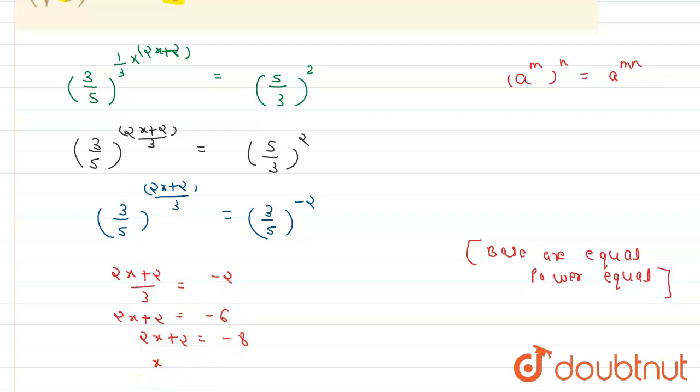So from here, we get 2x equals -8, therefore x equals -4.